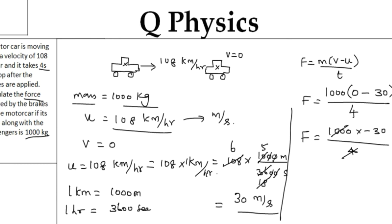F is equal to 1000 into minus 30 divided by 4. If I cancel these two things, it is going to be 250 into minus 30. If I simplify this entire equation, I am going to get minus 7500 newton.